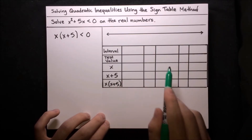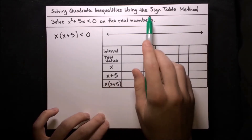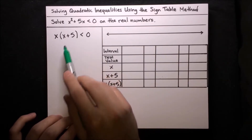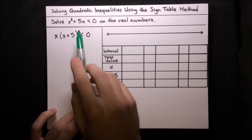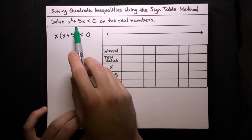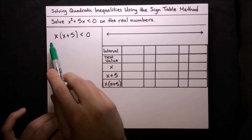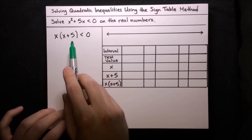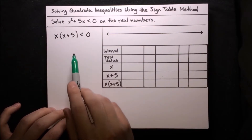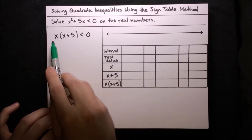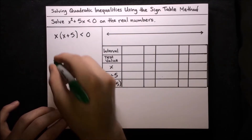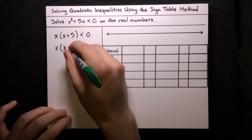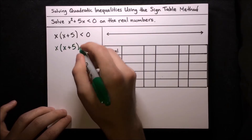Now it's time to start actually filling out the sine table. The point of the sine table method is to keep track of the signs of the factors — are they positive or negative — and what implications that has about the sign of the function. To figure out all the possibilities for the signs of the factors, we need to figure out where the factors switch over from being negative to positive or vice versa, and the way we do that is finding where each factor is equal to 0. That'll split the number line up into several intervals where we can find the sign of the function.